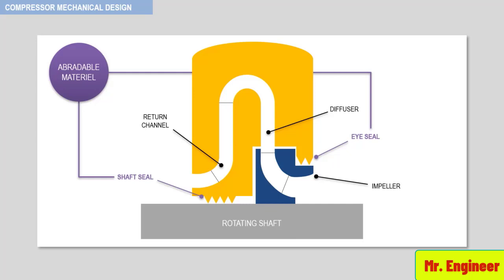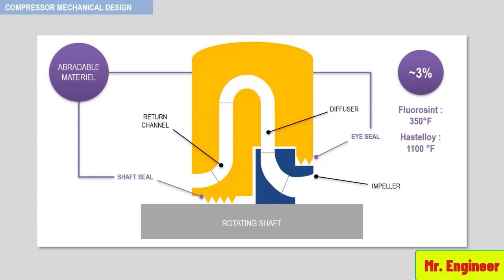Increases in stage efficiency as high as 3% have been obtained. Frequently used abradable seal materials are fluorosynth and honeycomb arrangements of hastaloy. The temperature limits of these materials are 350°F and 1100°F.